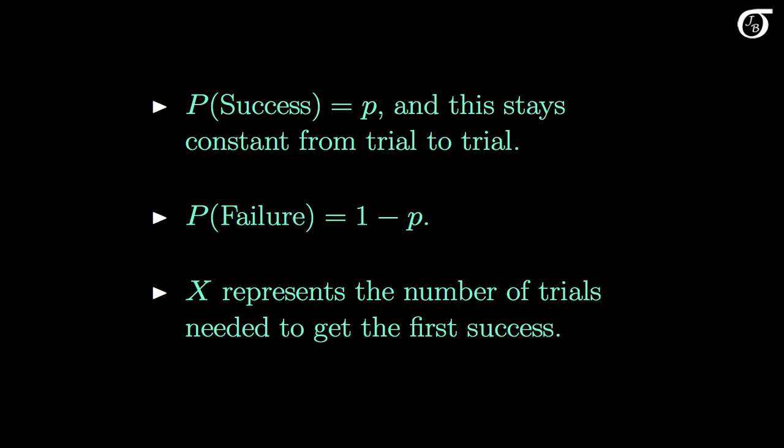We're going to let the random variable X represent the number of trials needed to get the first success — in other words, the trial number on which the first success occurs. The geometric distribution can be defined in different ways, and some sources define the random variable to be the number of failures before getting the first success, which is a little different, but we'll use this definition.